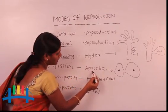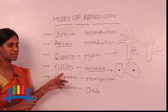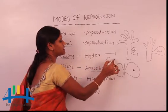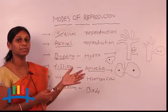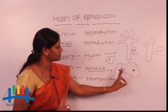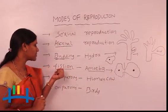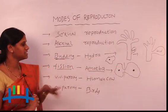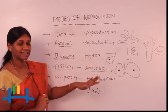One more lower animal is amoeba. When we observe amoeba, asexual reproduction occurs in it by fission. Fission means the organism divides into two parts. Amoeba has no fixed shape — its shape changes every minute. In fission, the nucleus divides first into two nuclei, then the cytoplasm and cell membrane divide, forming two daughter amoeba. So in fission, one amoeba becomes two daughter amoeba — first the nucleus divides, then the cytoplasm changes, and finally a new amoeba forms. Fission is another process of asexual reproduction in lower animals.